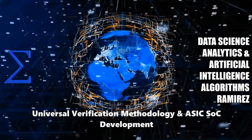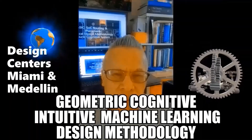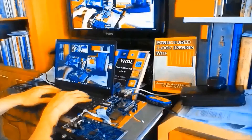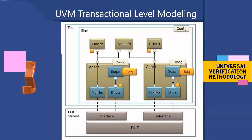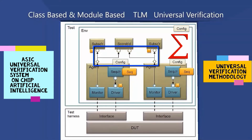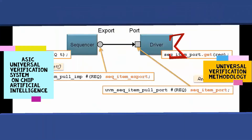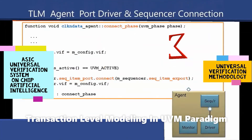UVM components communicate with standard transaction-level modeling (TLM) interfaces, which improves reusability. Using a SystemVerilog implementation of TLM in UVM, a component may communicate via its interface to any other component that implements that interface. Each TLM interface consists of one or more methods used to transport data. The TLM specifies the required behavior and semantics of each method, but does not define their implementation.